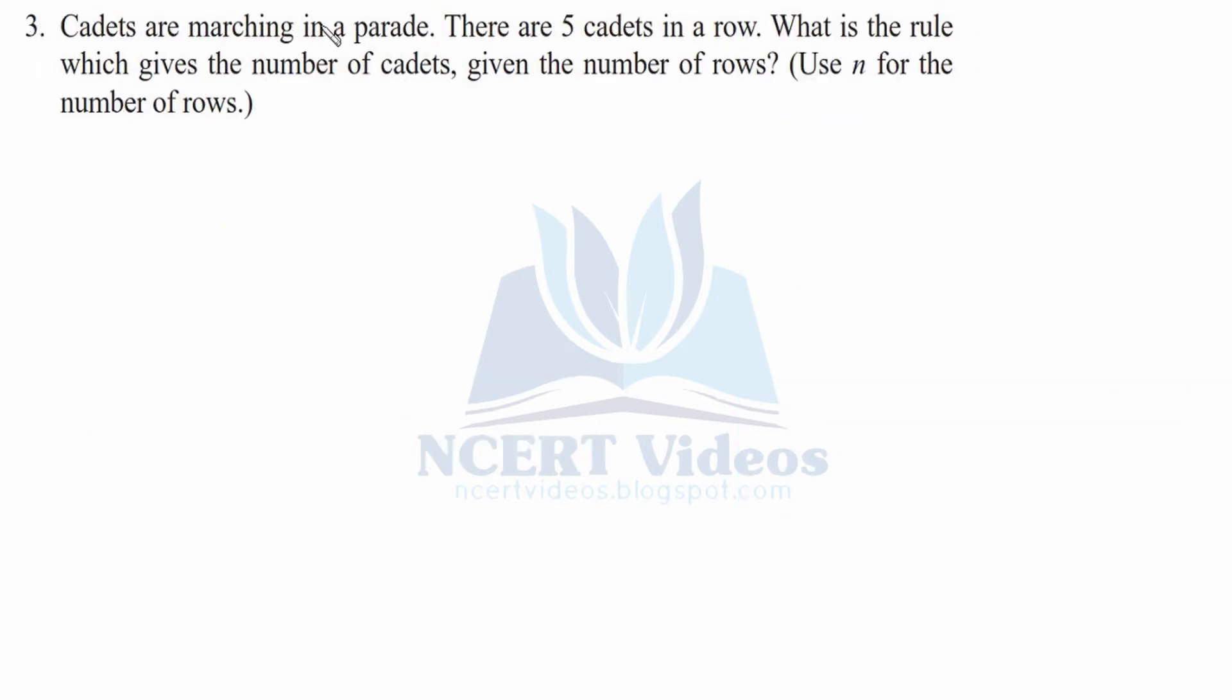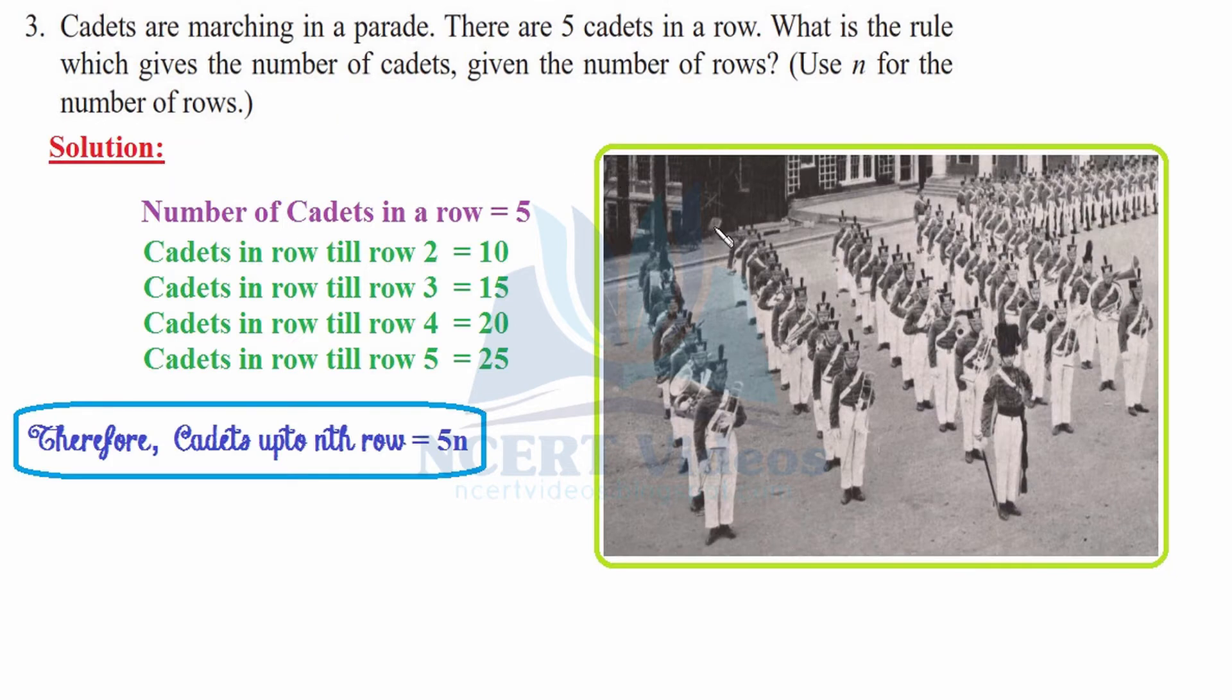Question 3: Cadets are marching in a parade. There are 5 cadets in a row. What is the rule which gives the number of cadets given the number of rows? Use N for the number of rows. This is a picture of 5 soldiers in a row marching. Number of cadets in a row is 5. In 2 rows, we have 10.